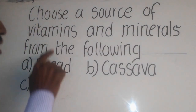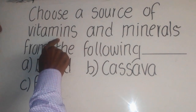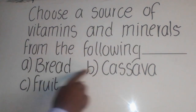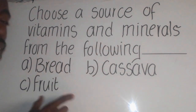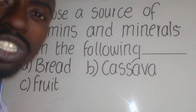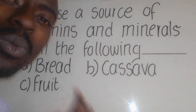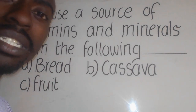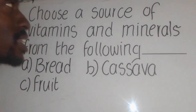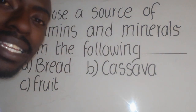A science question says: choose a source of vitamins and minerals from the following — we have bread, cassava, and fruit. You need to understand that here we are talking about nutrients. Nutrients are chemical substances which are required by the body for energy and protection. Now, they're saying choose a source, which simply means examples of food substances which contain vitamins and minerals.